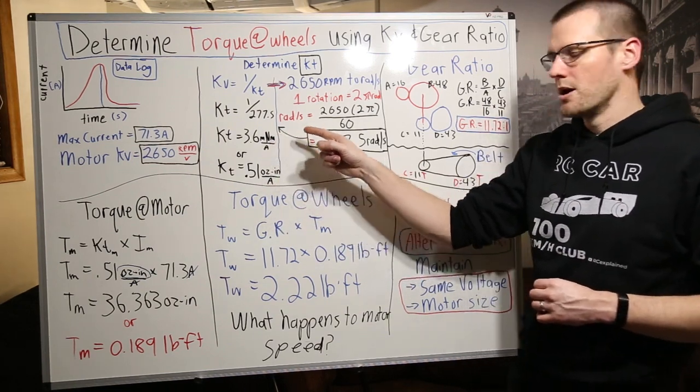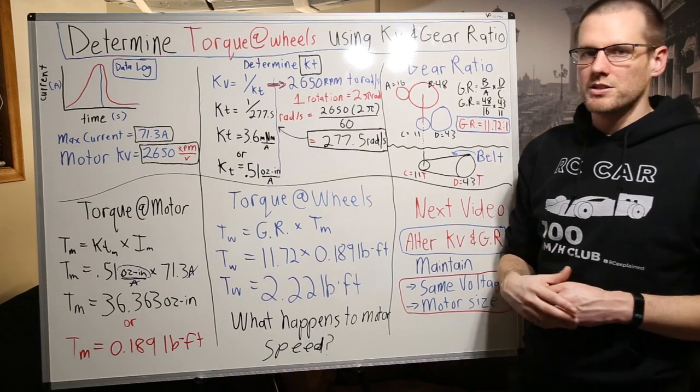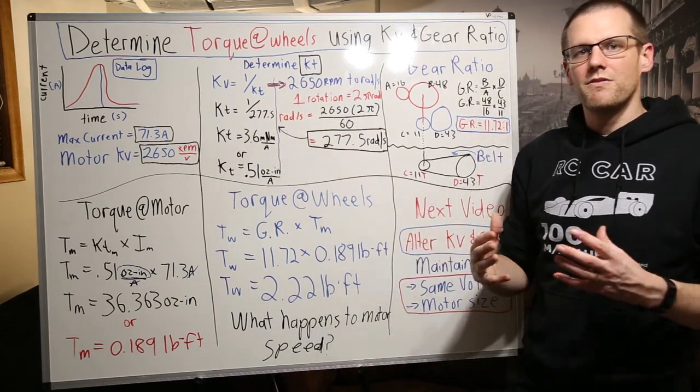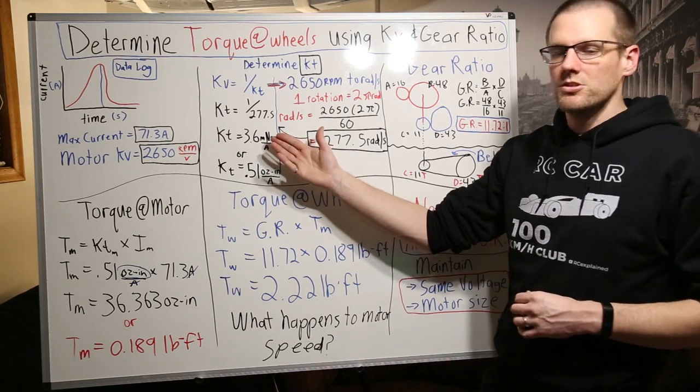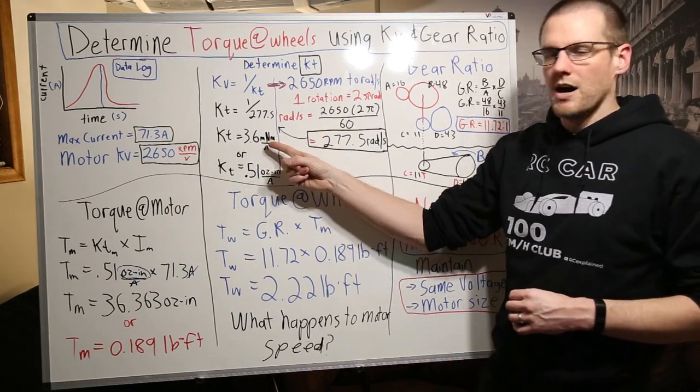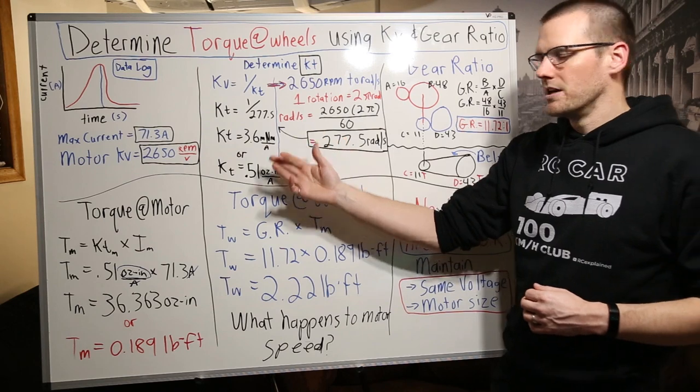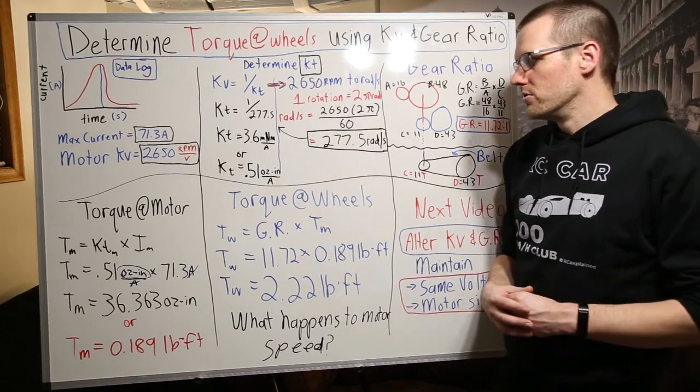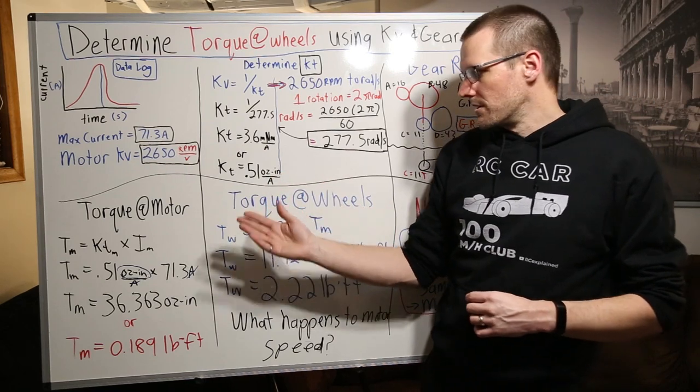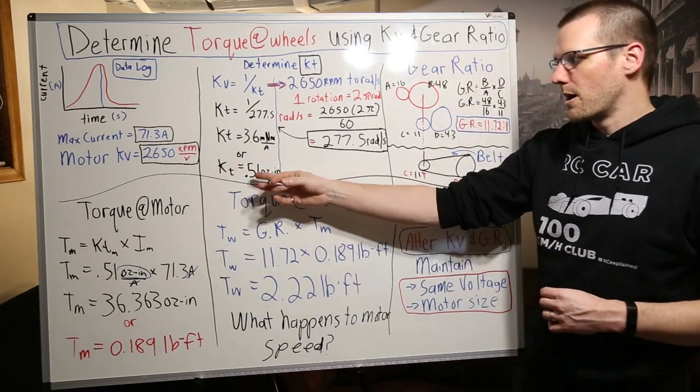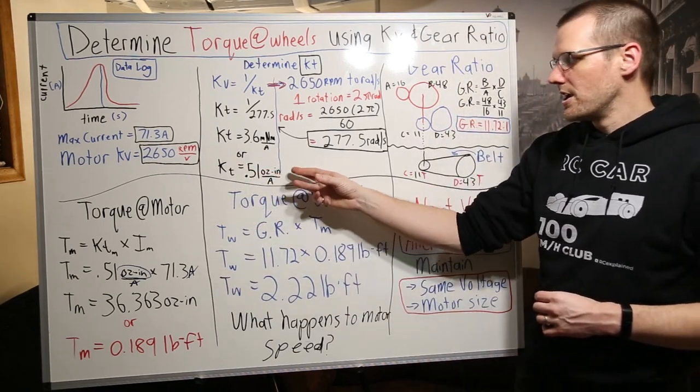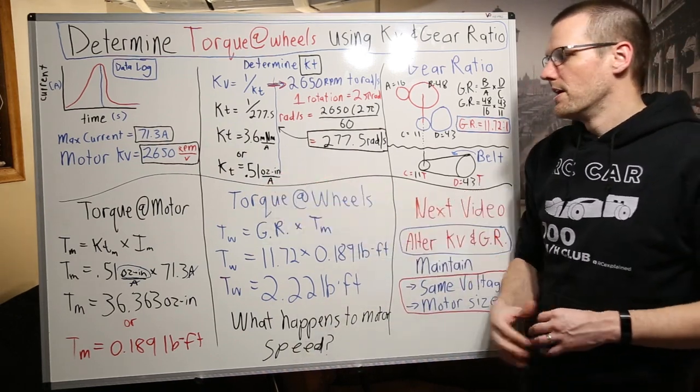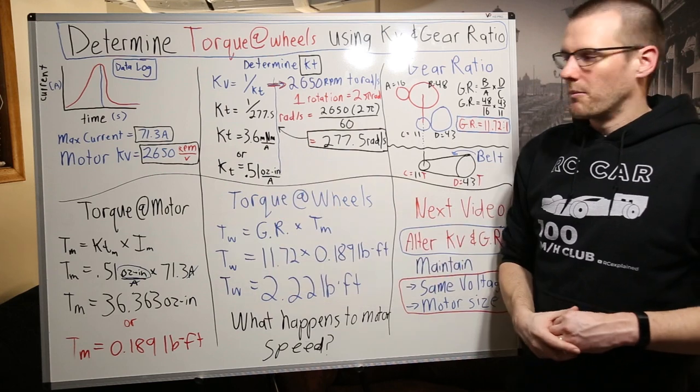and this is equal to 3.6 and keep a good note here, milli newton meters per amp. Now that's important because if you actually run this calculation, you're going to get 0.0036. It's a very small number. So what I like to do is just round it out by multiplying it by a thousand to get milli newton meters per amp. Now for those of you who use the Imperial system, KT is also equal to 0.51 inch ounces or ounce inches, per amp. So that's what you get for the Imperial system.